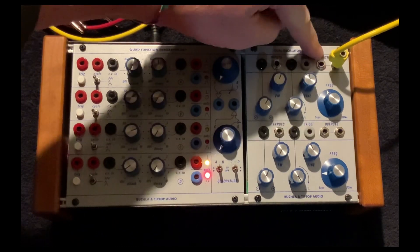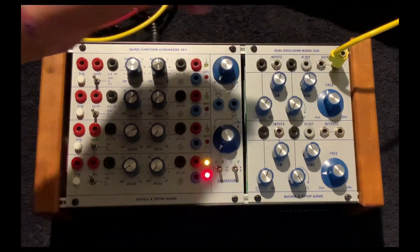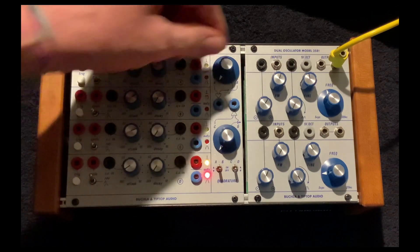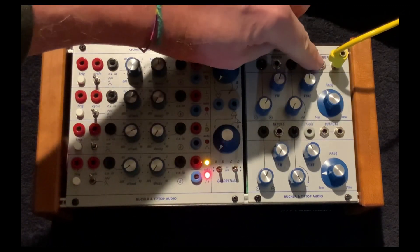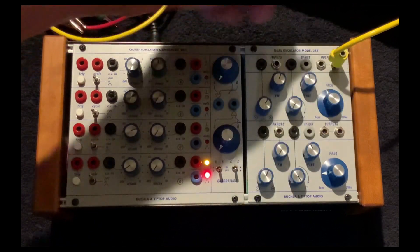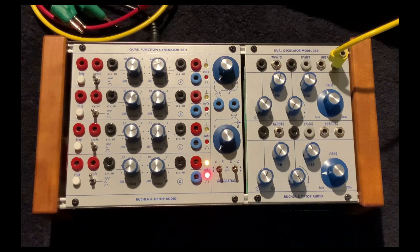First of all you have two audio outs, they are both the same and this is true of the Buchla 100, the 200, the 200E. My guess is the reason you have these are like mults, audio mults. You can send one to like a low-pass gate, the other you can send to FM something else or to a filter or to a ring modulator. It's pretty handy.